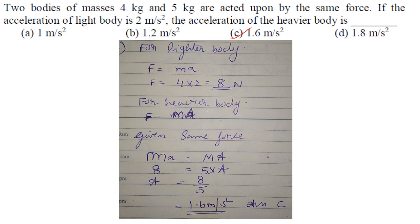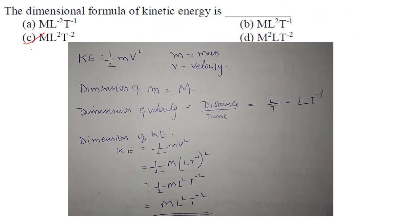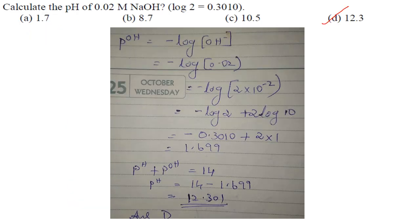The dimensional formula of kinetic energy: kinetic energy is given by the formula ½mv² where m is mass and v is velocity. Dimension of mass is M and dimension of velocity is L/T = LT^-1. So KE = M(LT^-1)² = ML²T^-2. The answer is option C.